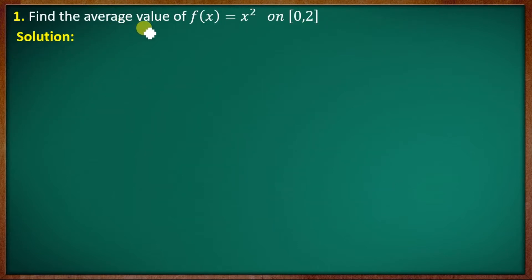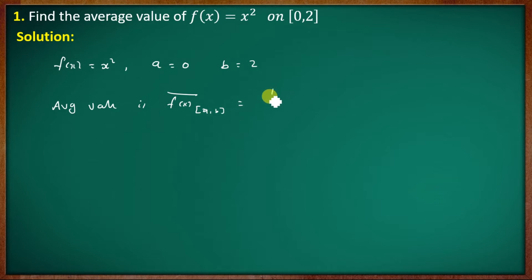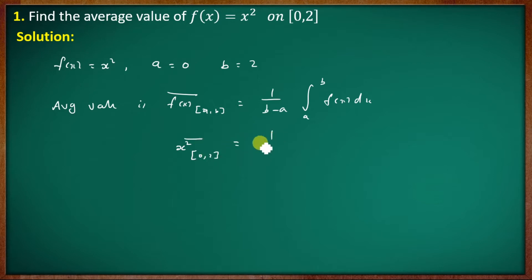First, find the average value of f(x) = x² on the closed interval [0, 2]. The function f(x) = x² on [0, 2]. So the average value is f̄[a,b] = (1/(b−a)) ∫ₐᵇ f(x) dx. With f(x) = x² on [0, 2], that equals (1/(2−0)) ∫₀² x² dx.